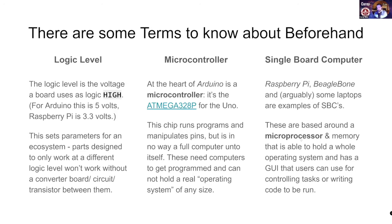Single board computers have microprocessors on them, which are different from microcontrollers — they're like a full processor. Sometimes there are even systems on a chip. As we move forward through the years, we're getting closer and closer to systems on a chip in lots of places. Microprocessors are what do the thinking on a single board computer, and then usually there's some memory and some other stuff. Those are three good terms to know.